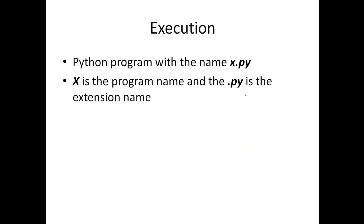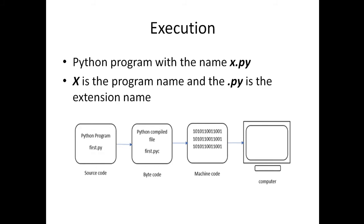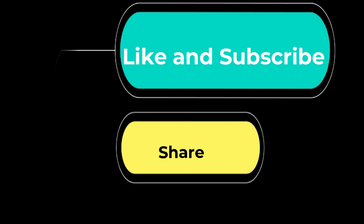Now, what are the execution steps of Python? If you save your file as x.py, then x is your program or file name and .py is the extension. The .py file is your source code, which is then compiled — the interpreter handles this itself. Inside the interpreter there is a compiler. Although we say Python is an interpreted language, it converts the code into machine code and runs it. I hope you like this video — share it, subscribe to the channel, thank you so much.